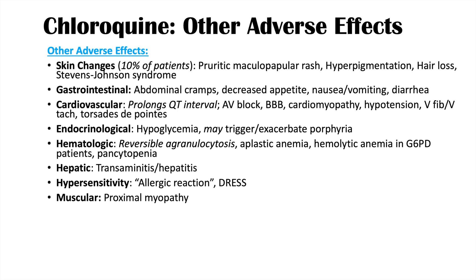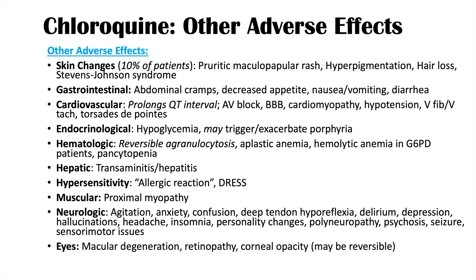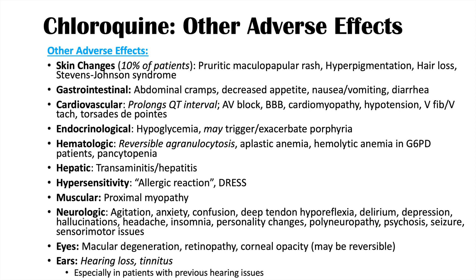There are also muscular adverse effects like proximal myopathy. Neurologic adverse effects with chloroquine include agitation, anxiety, confusion, deep tendon hyporeflexia, delirium, and depression, among many others. The eyes can also be affected — this is very important especially with prolonged treatment such as in individuals with lupus, who should have regular follow-up with an ophthalmologist to watch for macular degeneration or retinopathy. A reversible corneal opacity can also occur. The ears can be affected with hearing loss or tinnitus, especially in patients with previous hearing issues.